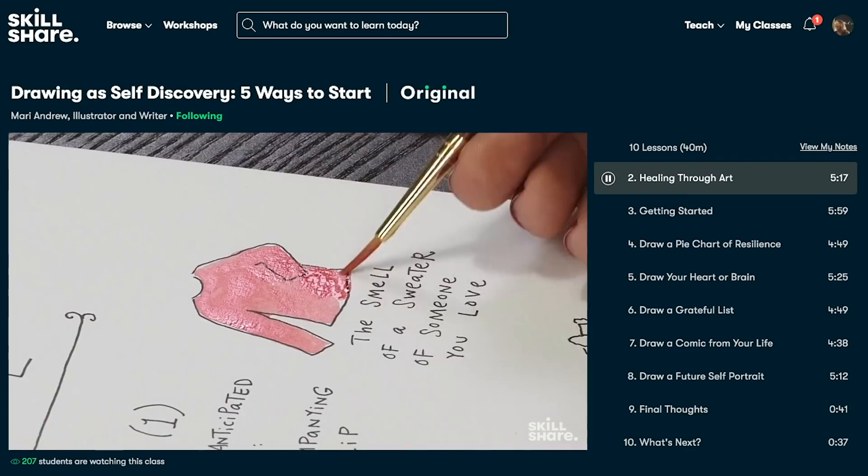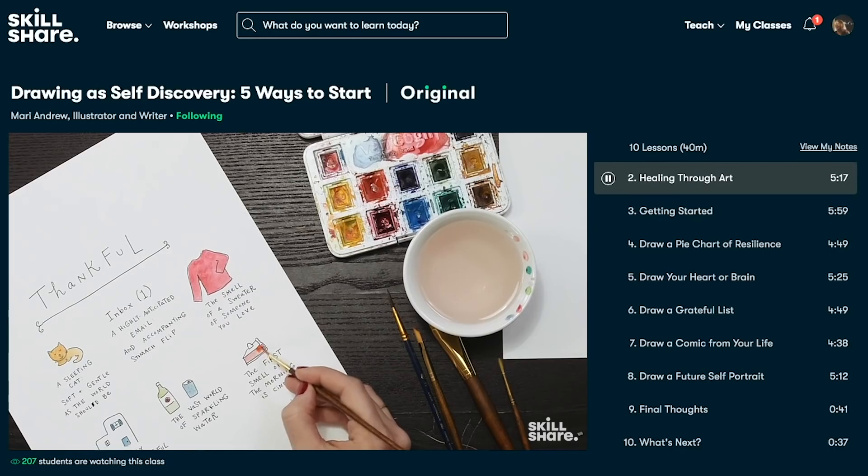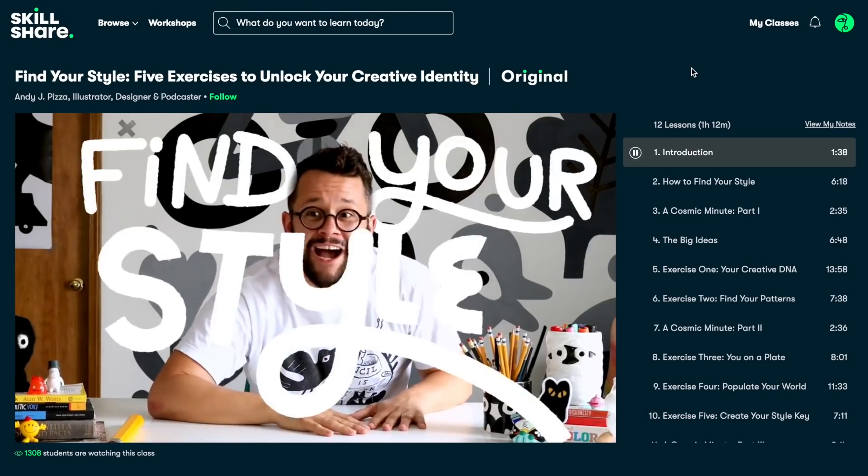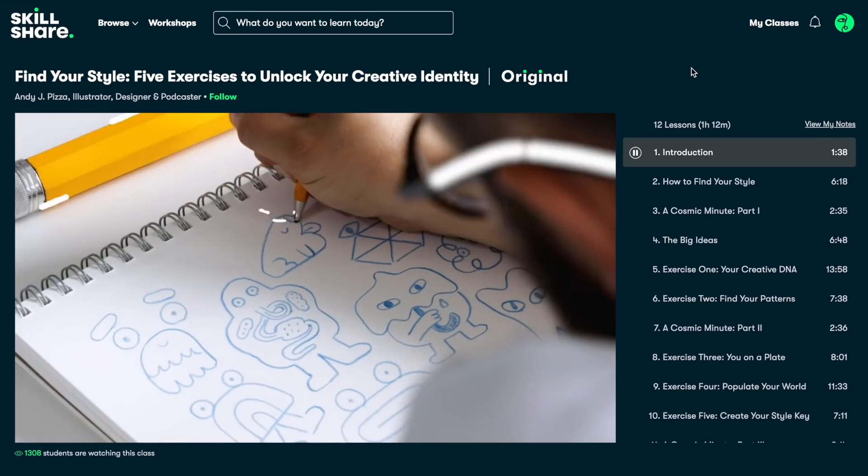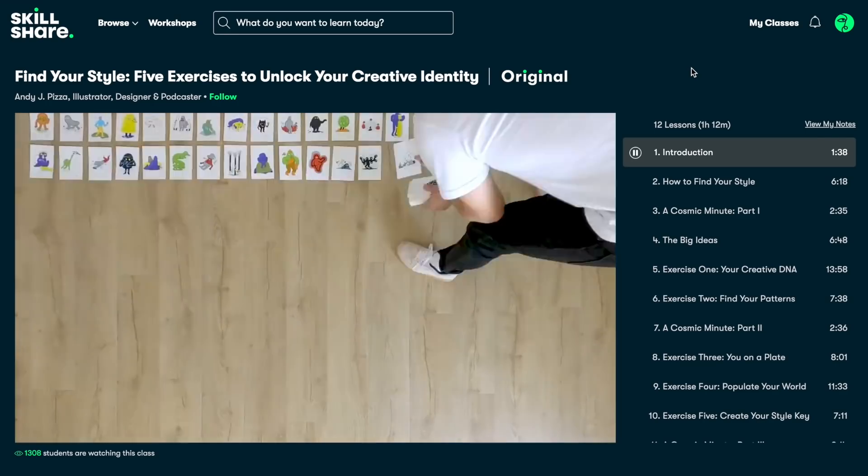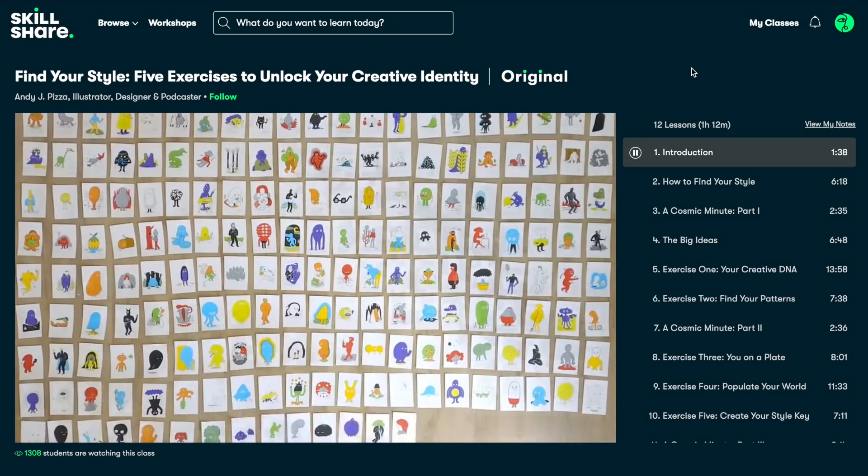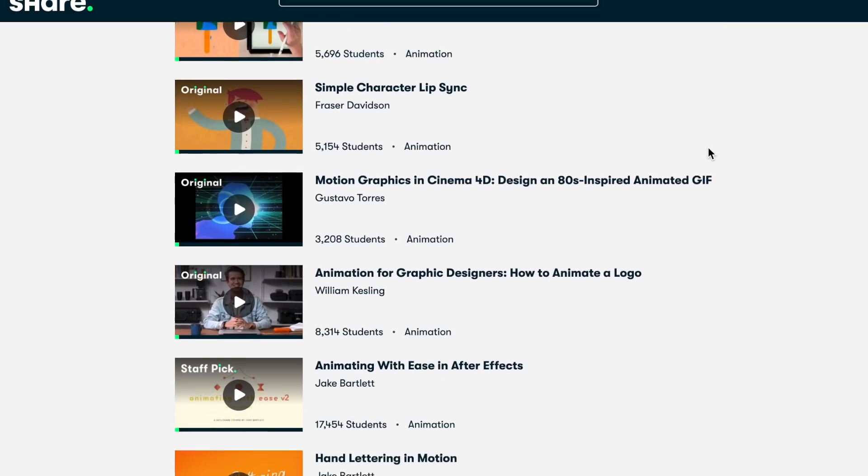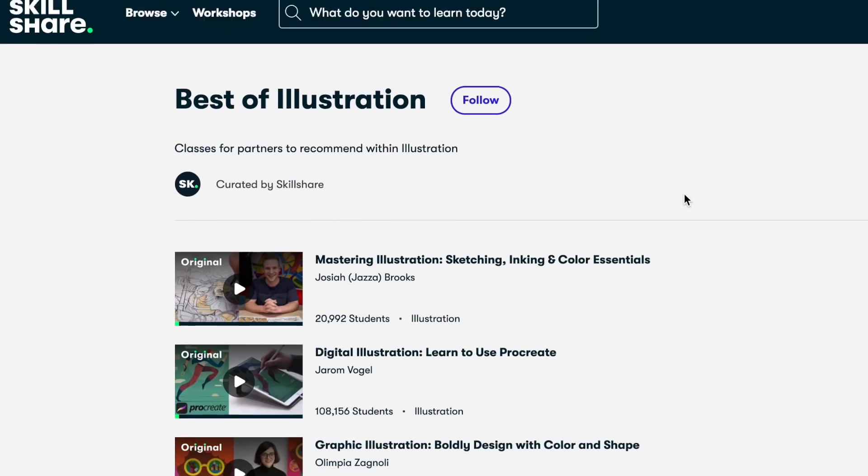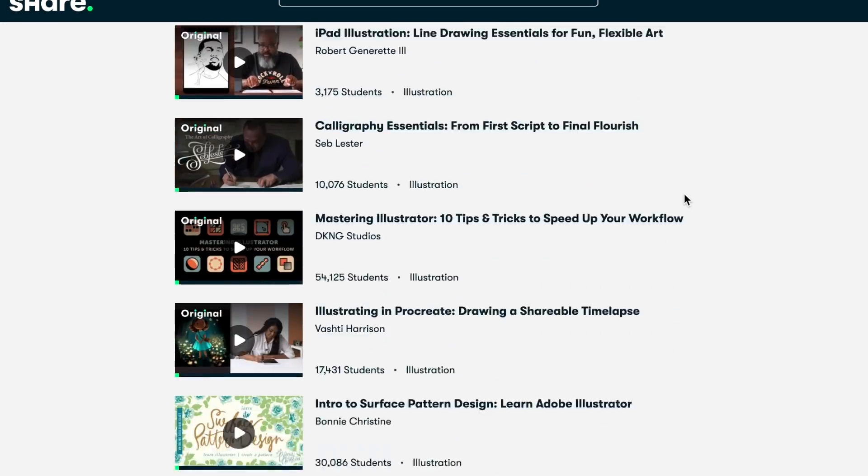I'm taking this class right now called Find Your Style, Five Exercises to Unlock Your Creative Identity by Andy J. Pizza, and it's a really helpful class on finding your own unique creative style. These are some excellent animation classes. Most classes are under 60 minutes with short lessons to fit any schedule, and it's less than $10 a month with an annual subscription.